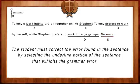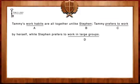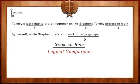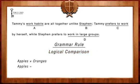However, in terms of this sentence, that is not the case. To solve this question, we're going to utilize the grammar rule known as logical comparison. The idea behind this rule is very simple: we cannot compare two things that are not the same kind. In other words, we cannot compare apples to oranges — we must compare an apple to another apple.